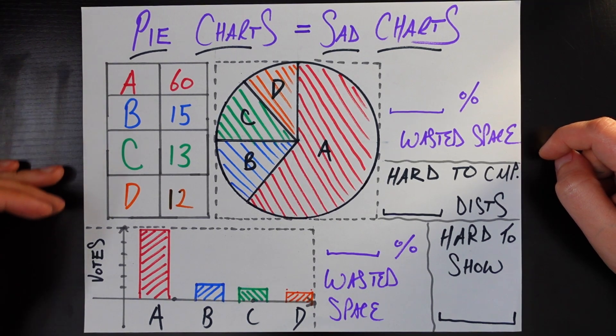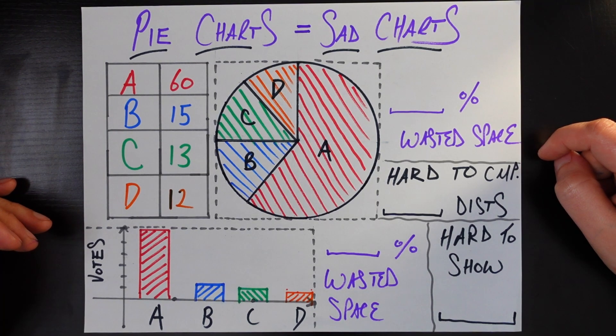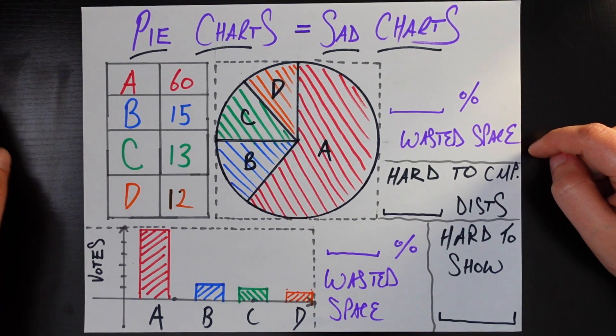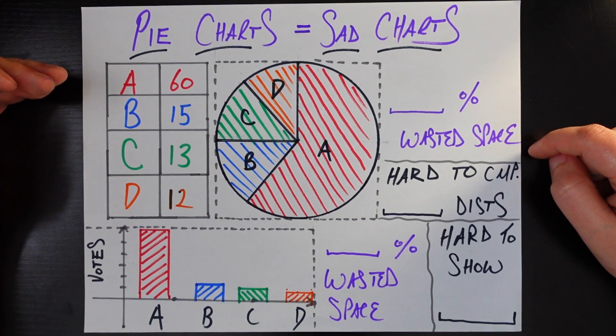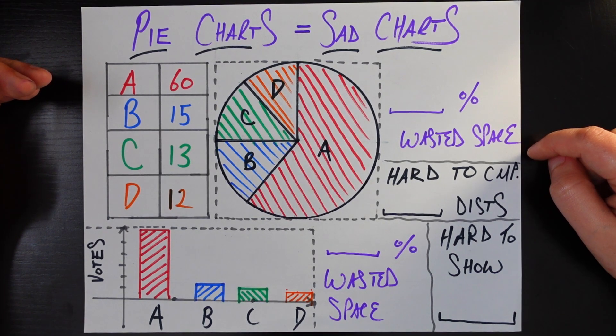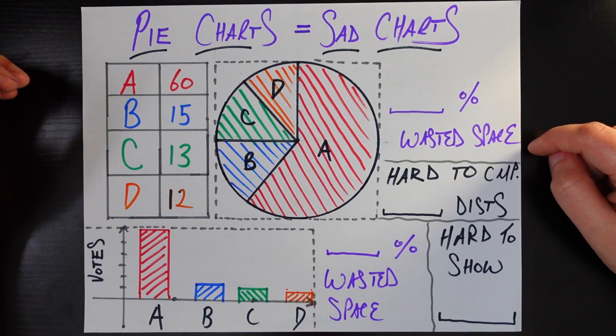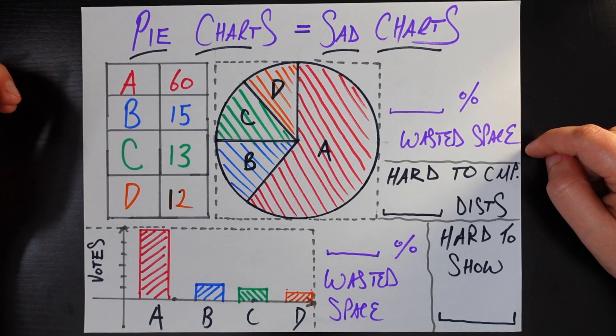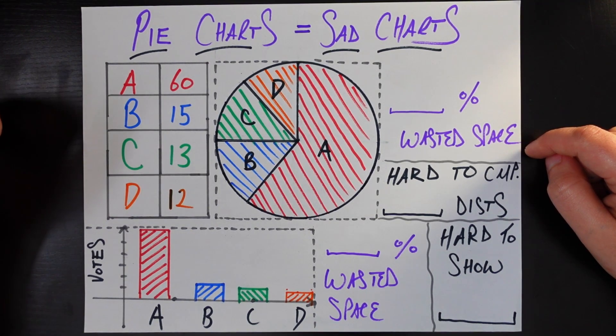So assume you have these counts of the number of people in some city that are voting for each political candidate A, B, C, and D. 60 folks voting for A, 15 folks voting for B, 13 people for C, and 12 people for D. Now you think about, I want to visualize this data. I want to show the people in my city what the current poll looks like.